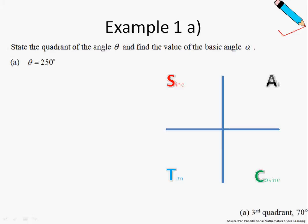In example 1a of chapter 11.2 trigonometry, we will learn how to identify theta as well as the basic angle alpha. The question says: state the quadrant of angle theta and find the value of the basic angle alpha. Since theta is 250 degrees, let us recall how we measure theta.